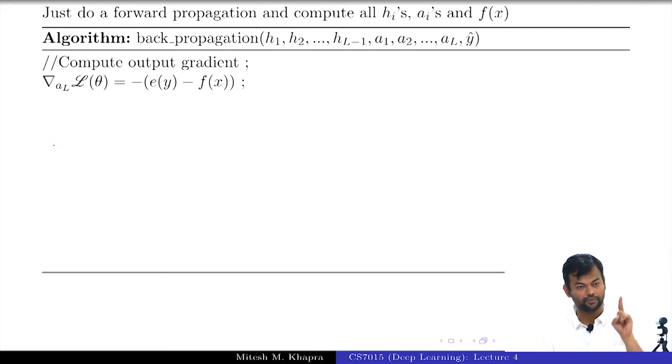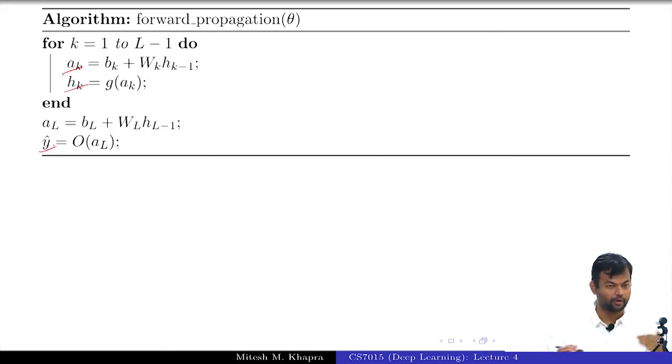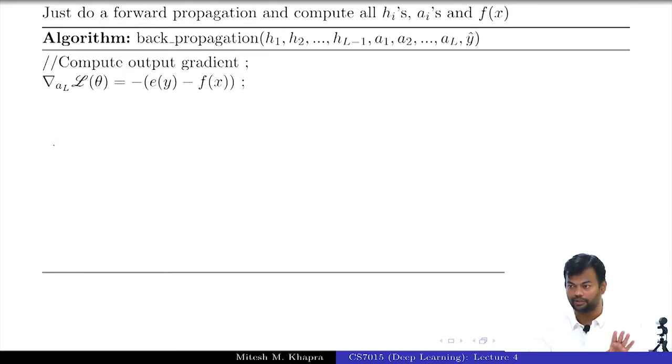So, the first thing I will compute is the gradient with respect to the output layer. See, even here the output layer was outside the loop, the same thing would happen here also in the back propagation. First you will compute the gradient with respect to the output layer and this is the formula if you remember from last class. Note that f(x) is known to you because you computed that in the forward pass, and e(y), what is e(y)? One hot vector with the correct label set to 1, and you know what the correct label is because we have given you the data.